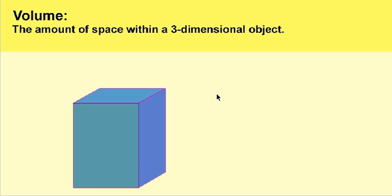This object is a three-dimensional object simply because it has length, it has width, and it has height. It has three dimensions: length, width, and height.